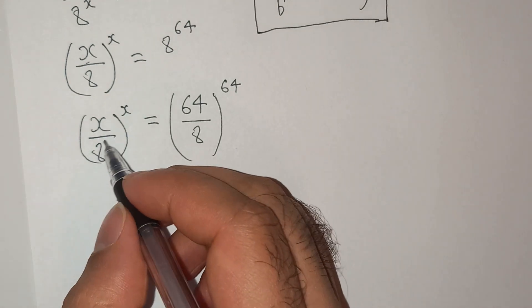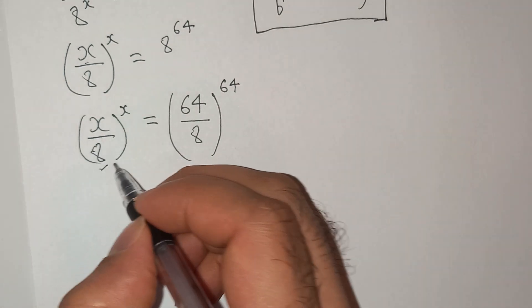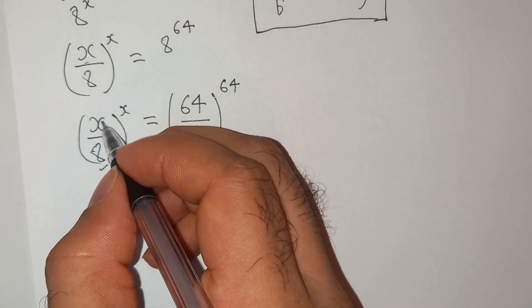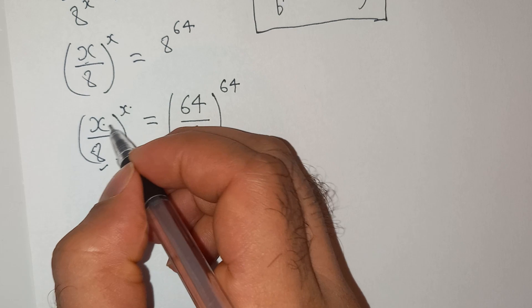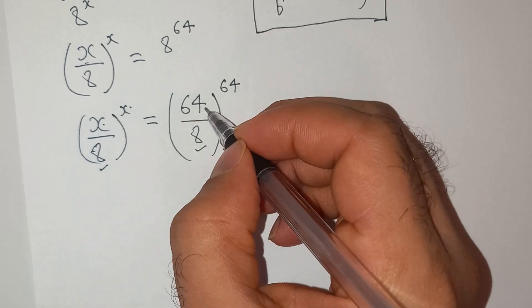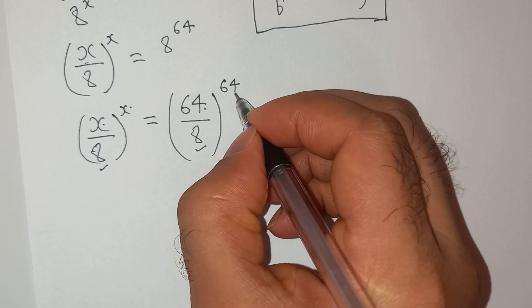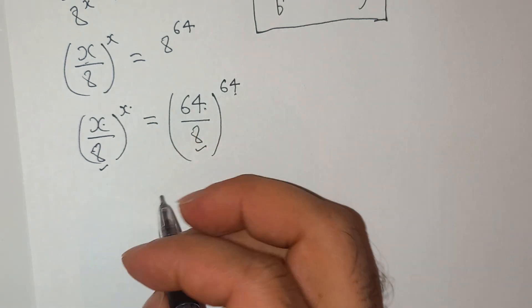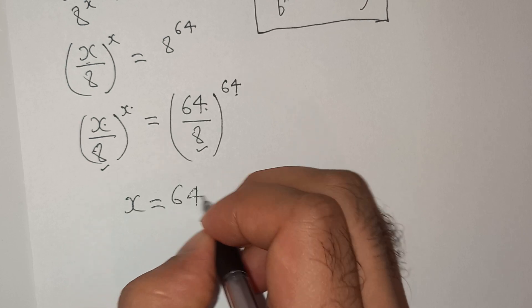Now you can compare left hand side with right hand side. The denominator is 8 and as you can see numerator on the left hand side and exponent have the same value and on the right hand side also we have the same value which is 64 and 64. So we can say that the value of x is 64.